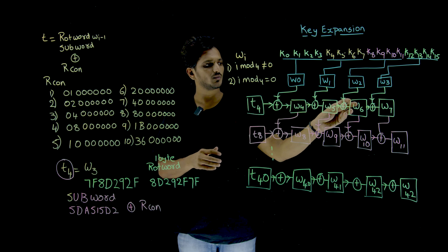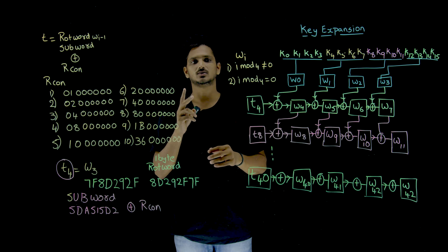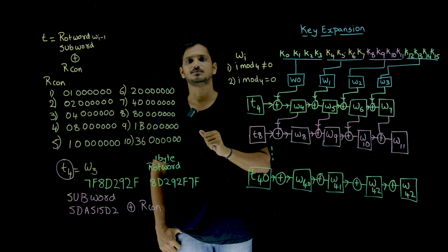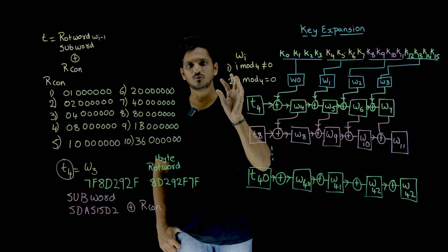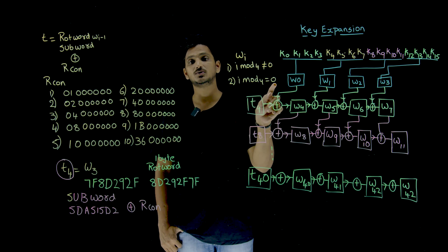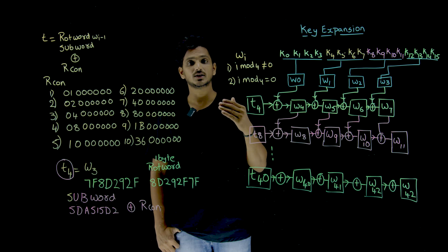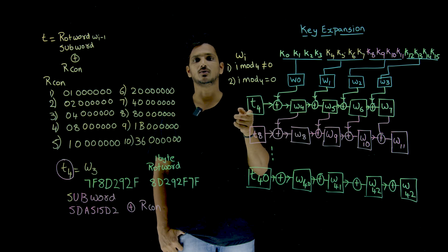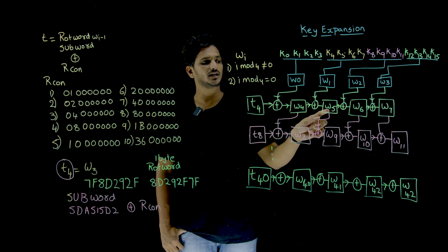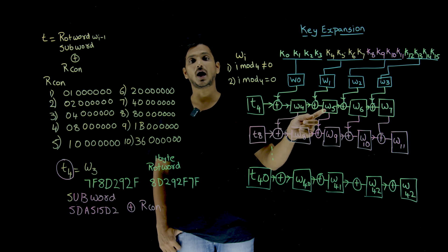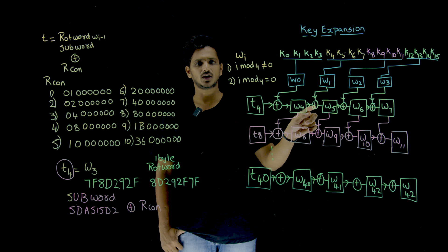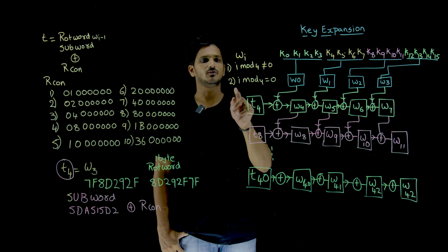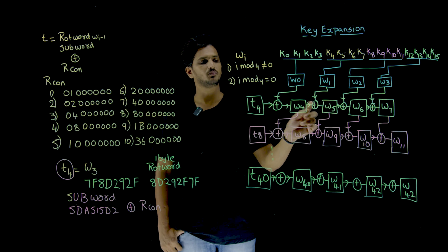In order to generate W4, W5, W6, W7 and all subsequent words, we have two conditions. We refer to the word as W_I, where I is the index — for W4, I equals 4; for W5, I equals 5. If I mod 4 is not equal to 0, we follow one condition. If I mod 4 equals 0, we follow another condition. For the case where I mod 4 is not equal to 0, take W5: 5 mod 4 is not equal to 0. W5 is generated from the previous word W_{I-1}, which is W4, XOR'd with the top word W_{I-4}, which is W1.